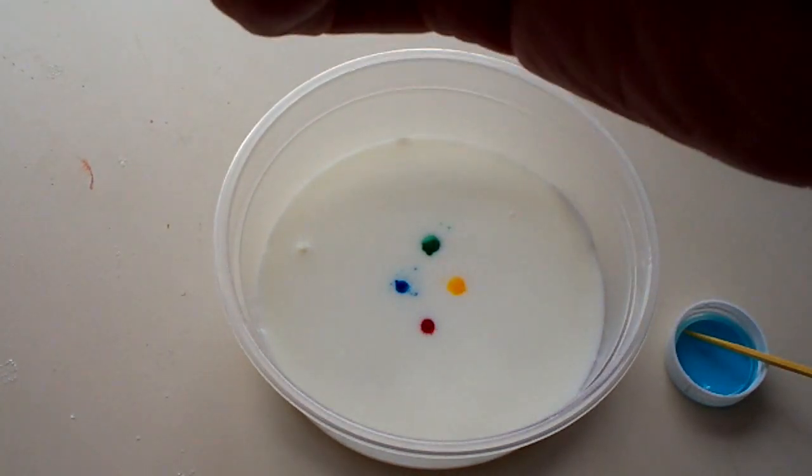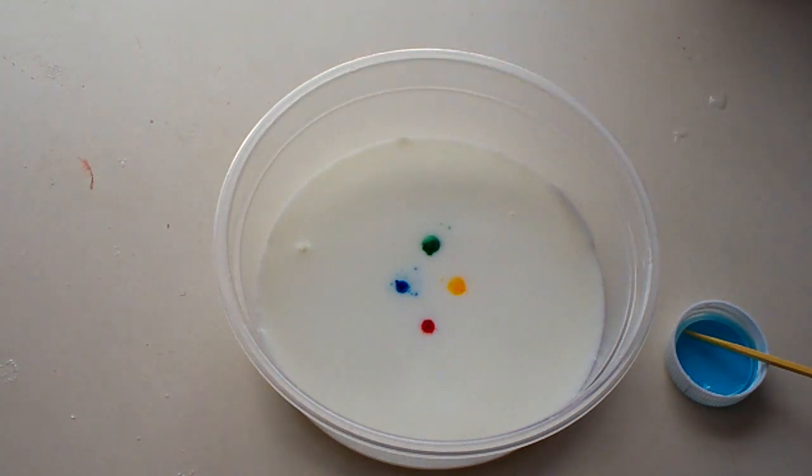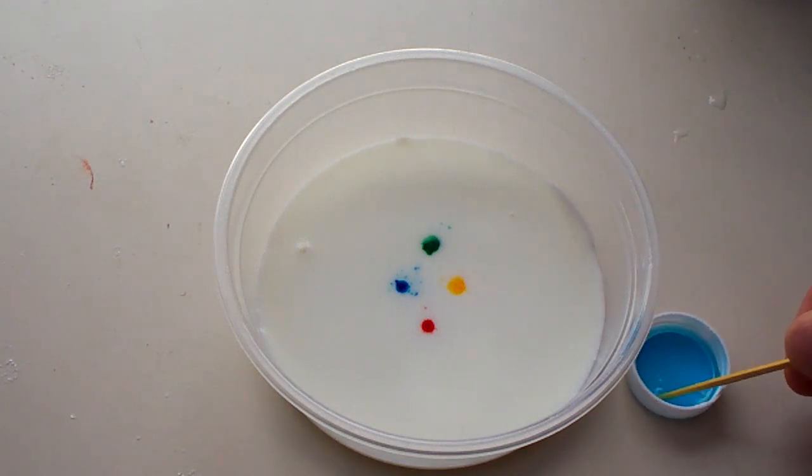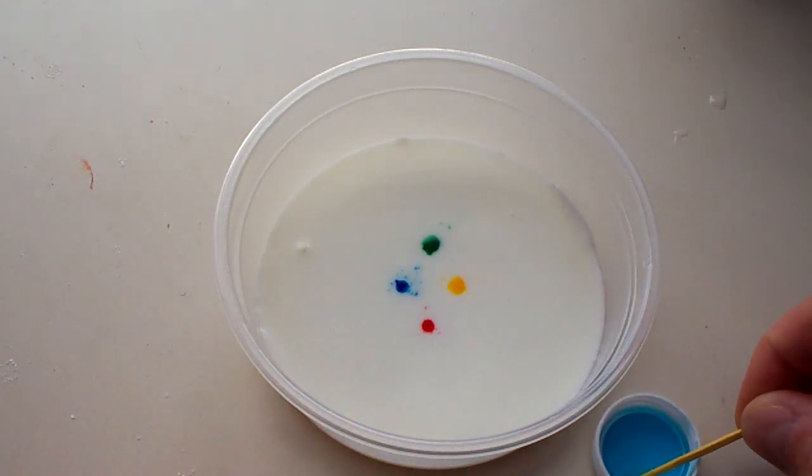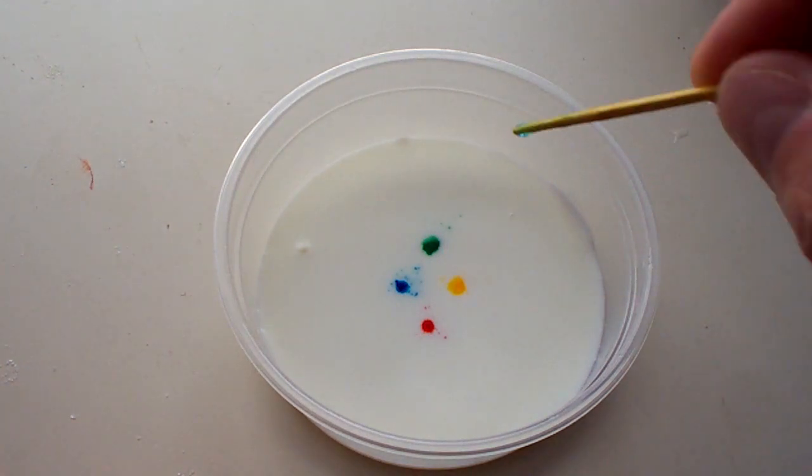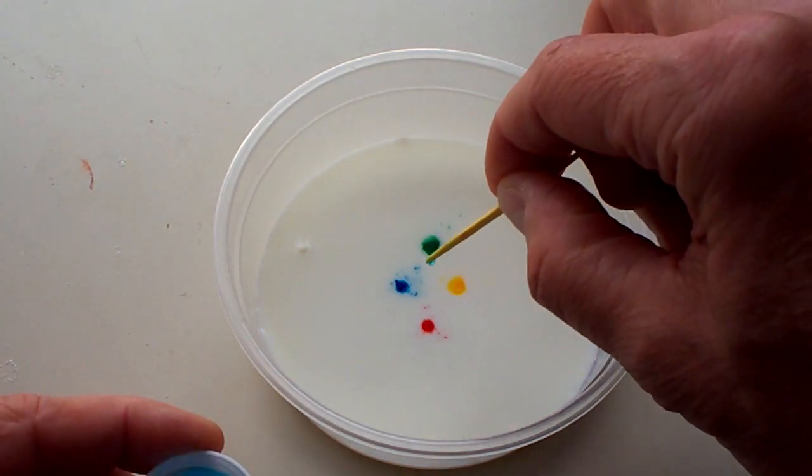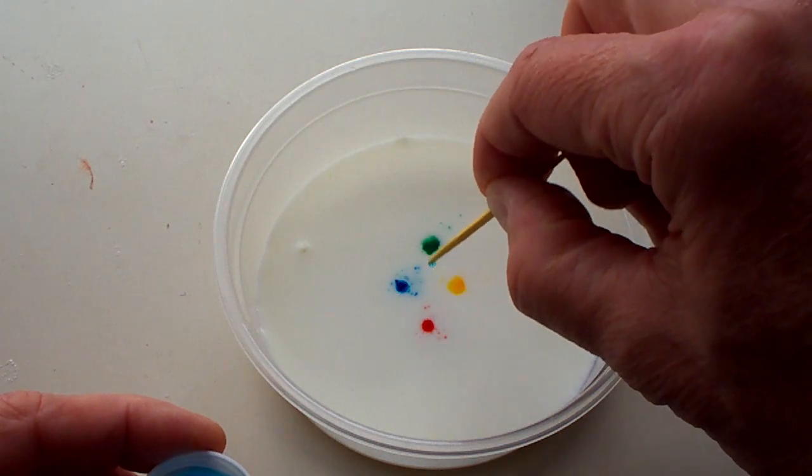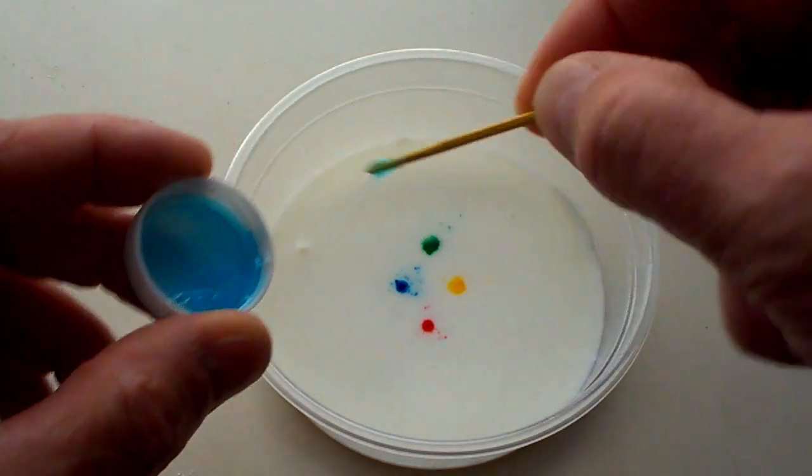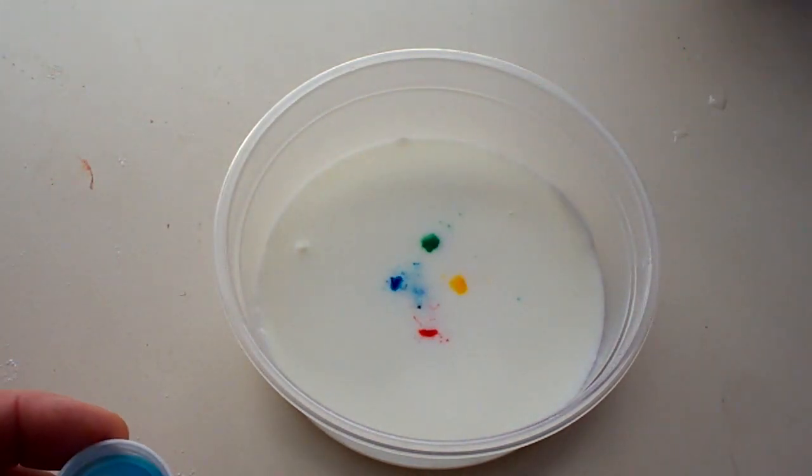I'm going to very gently put them in there. You want the drops to be as small as possible. We don't want to bump the bowl. We want that milk to be very still. I'm going to get a little bit of dish soap on the end of my toothpick here, and I'm just going to let the drop fall into the milk. Watch what happens.